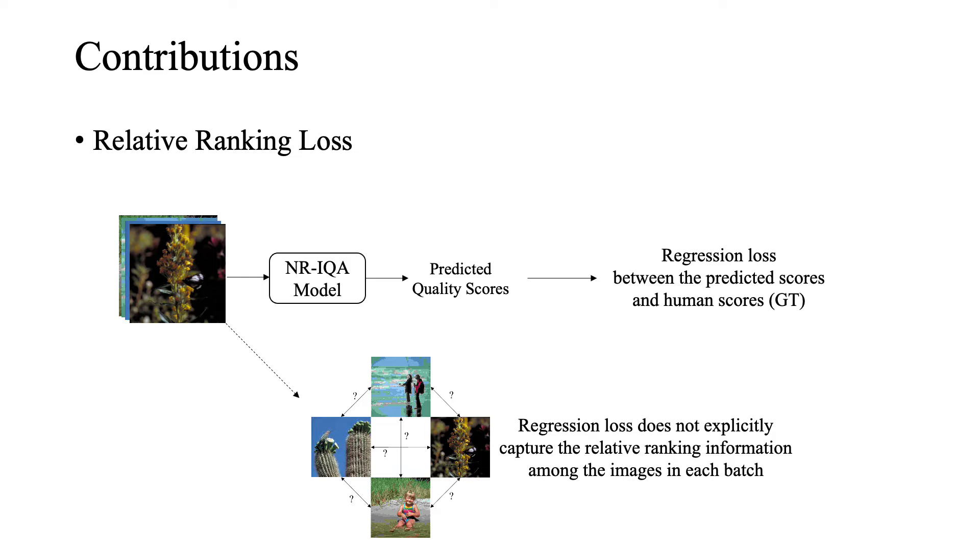This causes the model to not be able to use the relative ranking between the images explicitly. We propose a relative ranking loss that explicitly enforces the monotonicity correlation among the samples within each batch.